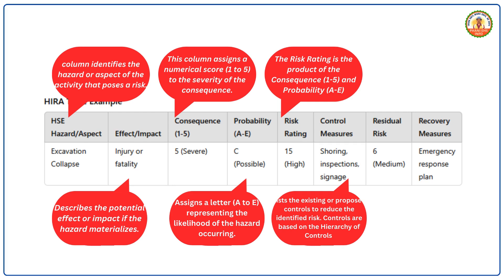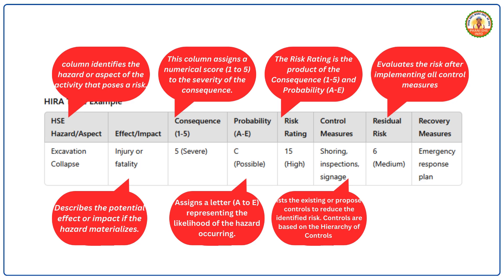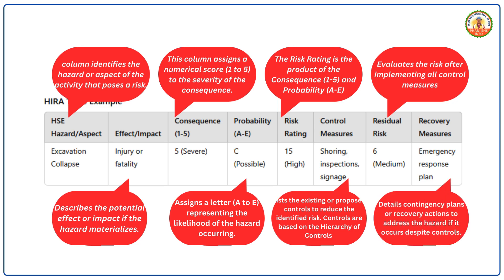Controls are based on the hierarchy of controls: elimination, substitution, engineering, administrative, and PPE. Residual Risk: evaluates the risk after implementing all control measures — a new consequence and probability score are assigned. For example, residual risk = consequence 3 × probability 2 = 6 (medium risk). Recovery Measures: details contingency plans or recovery actions — for example, an emergency response plan including rescue procedures and first aid.